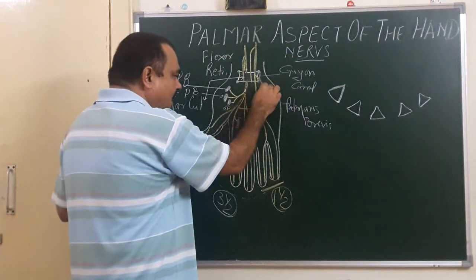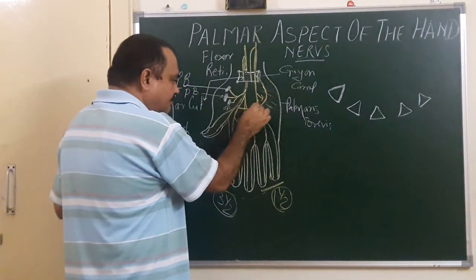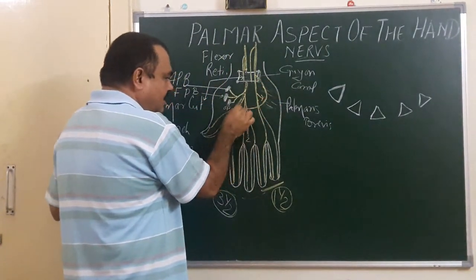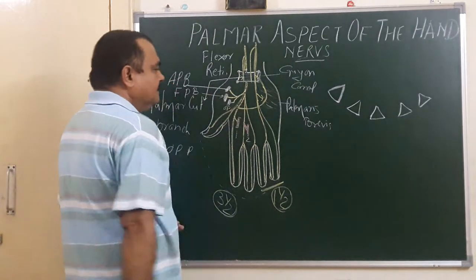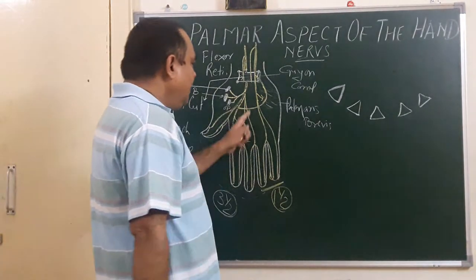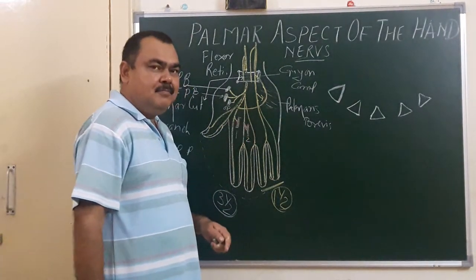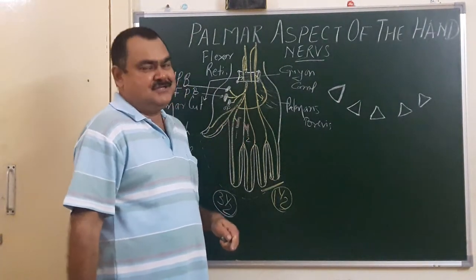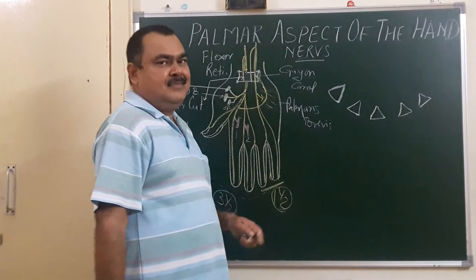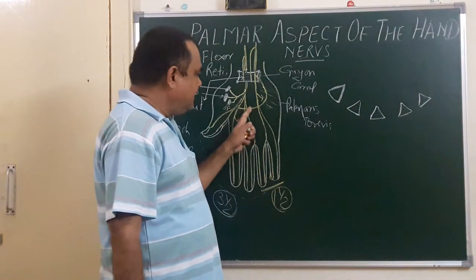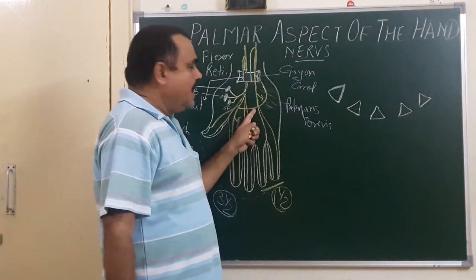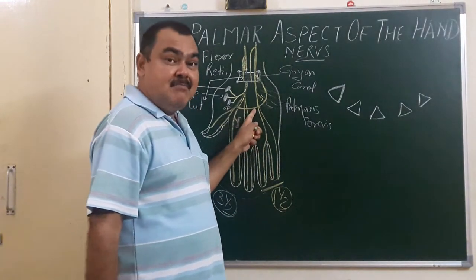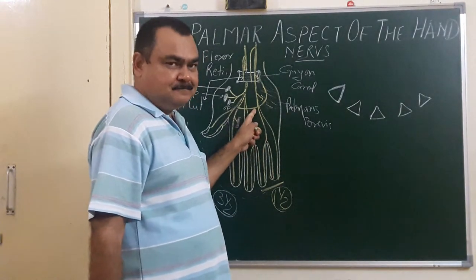Running along the concavity of the deep palmar arch, the deep branch gives branches to fifteen muscles.